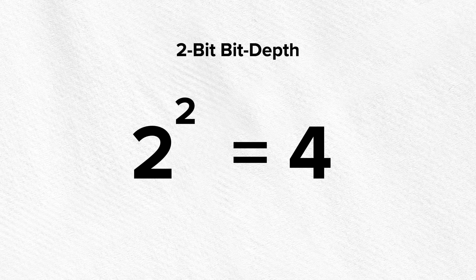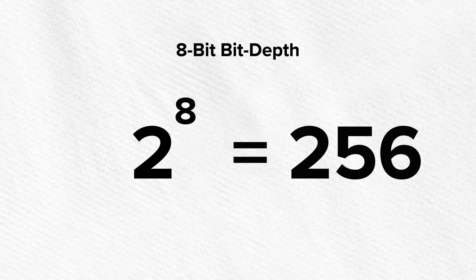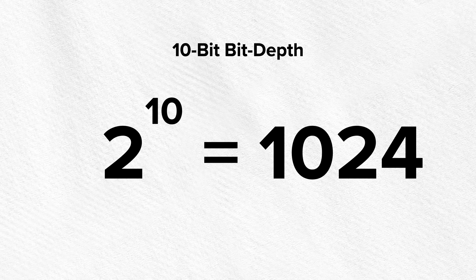If we have a bit depth of two bits, it's 2 to the power of 2, which is four shades of gray. A three-bit depth is 2 to the power of 3, which gives eight shades. Now skipping ahead to 8-bit: 2 to the power of 8 results in 256 shades of gray. And for 10-bit footage, 2 to the power of 10 gives us 1024 shades of gray. The difference these two additional bits make is already massive. You can think of bit depth as the resolution of how many steps between black and white we can resolve — having more steps means capturing and displaying more information, just like having more pixels.